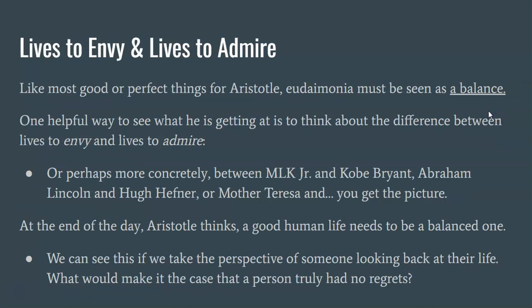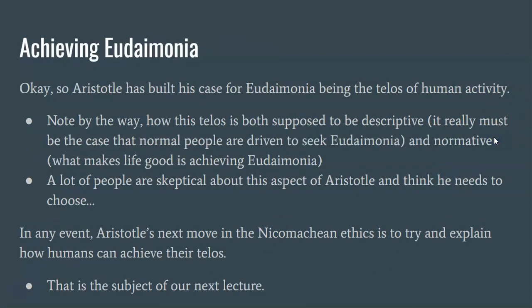Now, like most good or perfect things for Aristotle, eudaimonia must be seen as a balance. If you remember anything about Aristotle, remember the idea of the golden mean: every good is a kind of balance between extremes. One helpful way to see what he's getting at is to think about the difference between lives to envy and lives to admire — or very concretely, the difference between Martin Luther King Jr. and Kobe Bryant, between Abraham Lincoln and Hugh Hefner, or Mother Teresa and, well, you get the picture. At the end of the day, Aristotle thinks a good human life needs to be a balanced one. We can see this by taking the perspective of someone looking back at their life: what would make it the case that the person truly had no regrets? So Aristotle has built his case for eudaimonia being this balance — the telos of humanity, that end for the sake of which we acquire wealth, power, and so on.